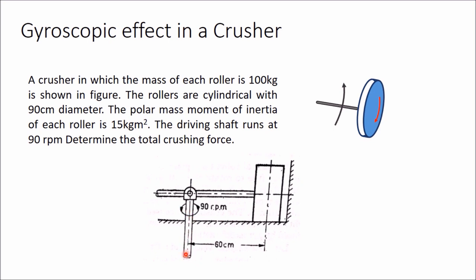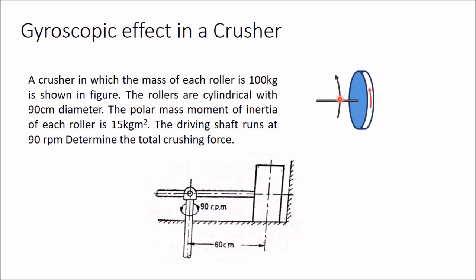This is the driving arm, rotating at 90 rpm in anti-clockwise direction when viewed from the top. So when this driving shaft rotates anti-clockwise, this arm will also rotate anti-clockwise in that direction. When this arm rotates in this direction, this roller will also rotate anti-clockwise when viewed from the left side, or equivalently, clockwise when viewed from the right side.